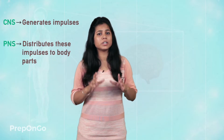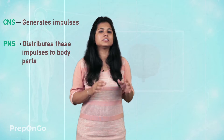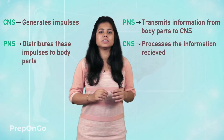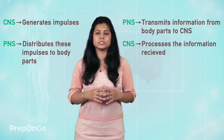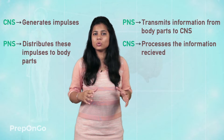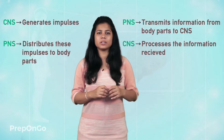We also know that these systems assist each other. If the impulse is generated from the central nervous system, it needs the peripheral nervous system to transfer its signals to different parts of the body. In the similar way, the peripheral nervous system brings the impulse from all over the body to the central nervous system. Hence, the central nervous system and the peripheral nervous system are dependent on each other.